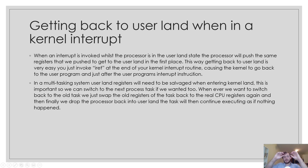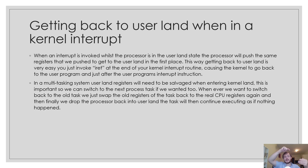Getting back to userland when in a kernel interrupt is easy — just call IRET, because the processor automatically pushes everything needed to the stack when userland code triggers an interrupt. In a multitasking system, userland registers need to be saved when entering kernelland. We can take advantage of the timer interrupt to grab the current task, save all its registers in memory, then switch to another task. As long as we restore the saved registers when switching back, tasks will have no idea they were paused — that's how multitasking works.